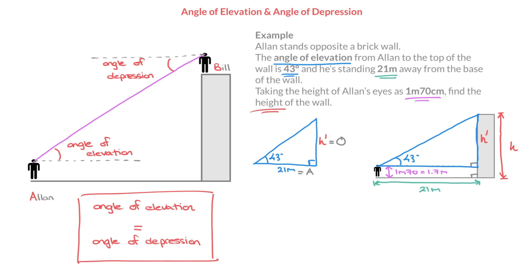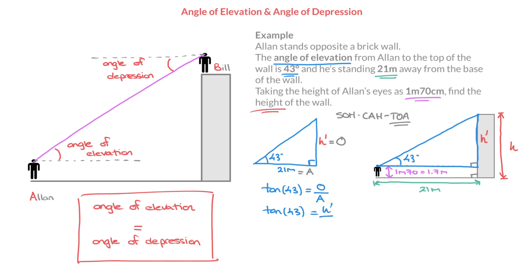Looking for which of SOH, CAH, or TOA contains the letters O and A — it's TOA. This tells us that the tangent of the angle equals the opposite over the adjacent. In this case, the tangent of 43 equals the opposite over the adjacent. Since the opposite is h prime and the adjacent is 21, we can say that tan(43) = h prime / 21.